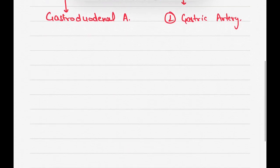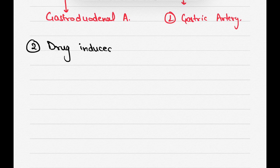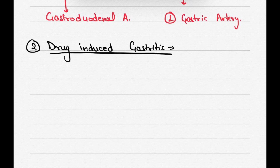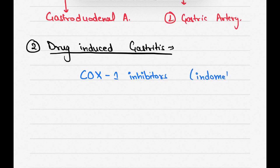Now coming to the second cause, which is drug induced gastritis. So which drug can cause drug induced gastritis? These drugs are COX-1 inhibitors, which includes indomethacin.